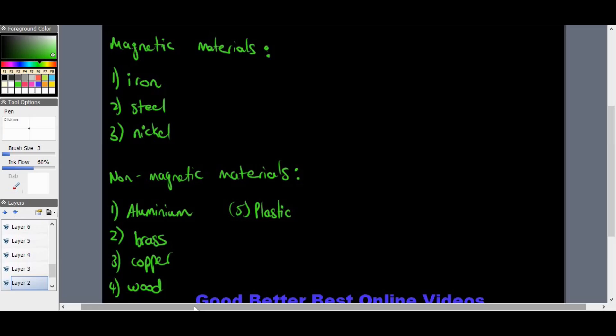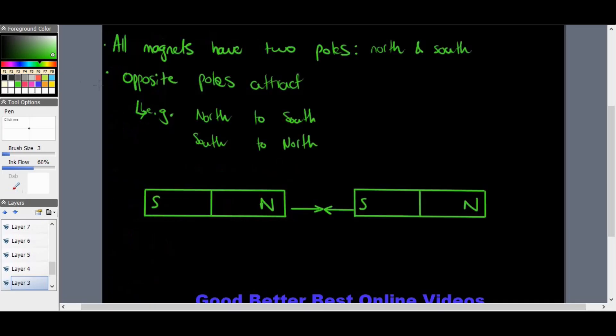All magnets actually have two poles: north pole and a south pole. To basically explain the attraction, opposite poles attract - north to south or south to north, whichever way you want to look at it.